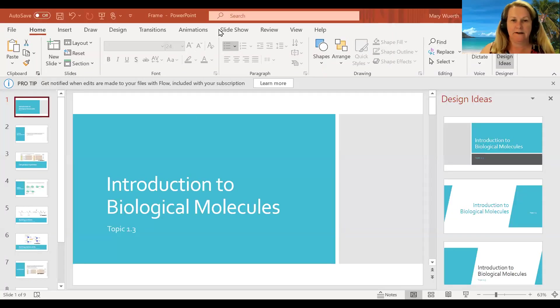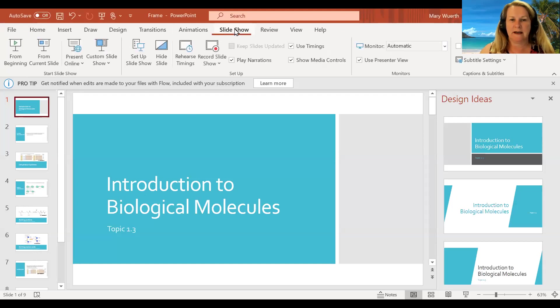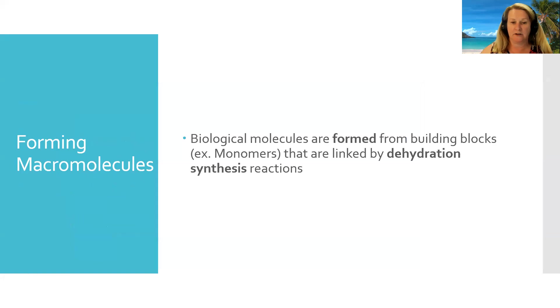Hi, everyone. Today, we're going to introduce you to macromolecules and how they are built. So let's get started here. There's four major types of macromolecules that you need to know about for AP biology: carbohydrates, proteins, lipids, and nucleic acids. And the first thing you need to understand is how they're built.